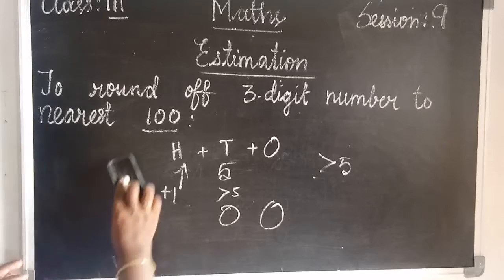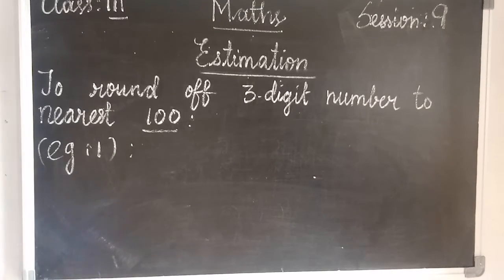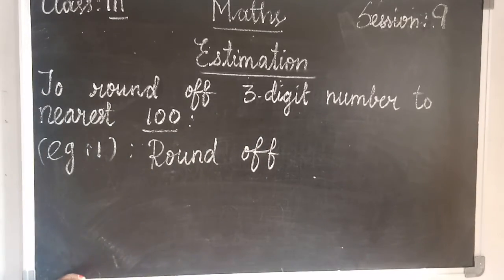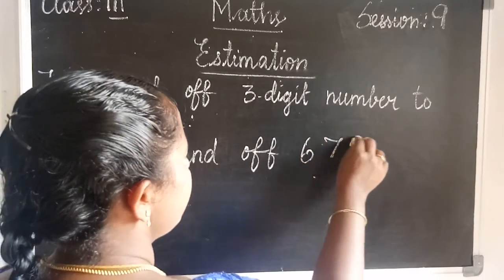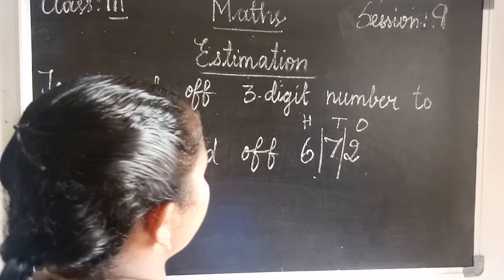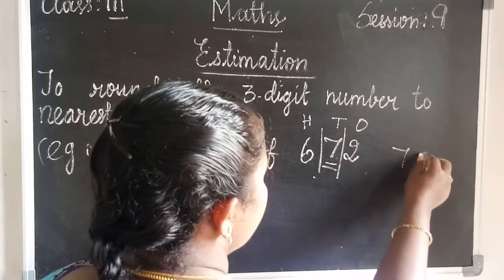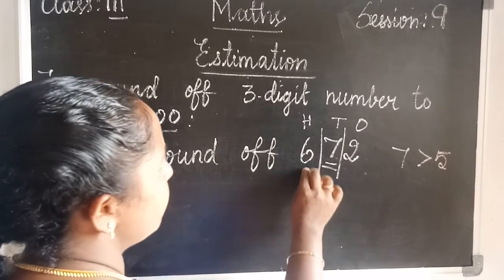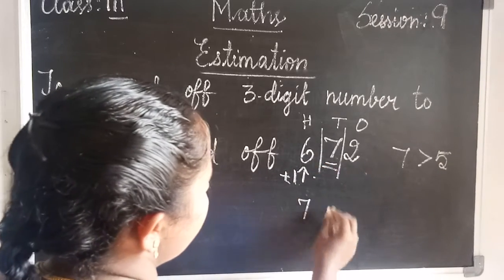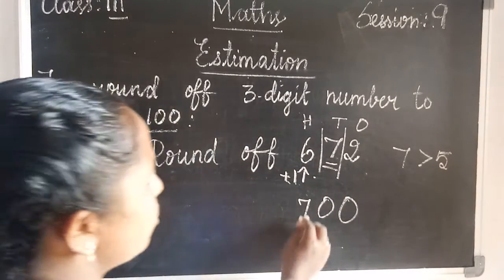Now we see an example. Example number 1: round off 672. First of all, write the place value — ones, tens, and hundreds. You see the tens place value first. 7 is greater than 5, so you increase the hundreds place value by 1. So 6 plus 1 is 7, and then tens and ones place values are 0.